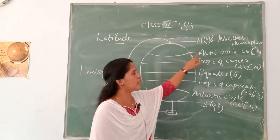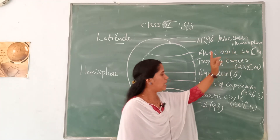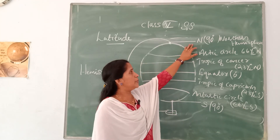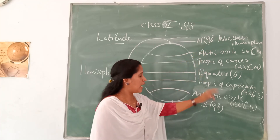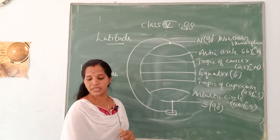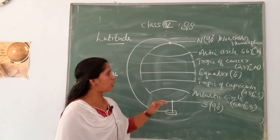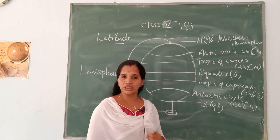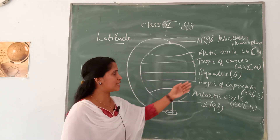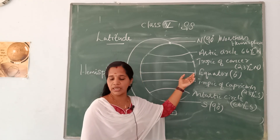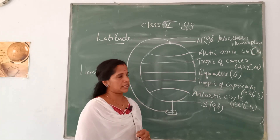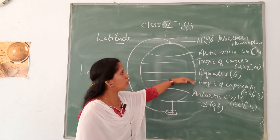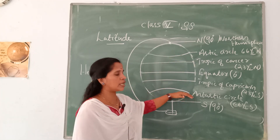The Arctic Circle is at 66.5 degrees north, and the Antarctic Circle is at 66.5 degrees south. The northern hemisphere goes up to 90 degrees north. To summarize: the equator is an imaginary line at 0 degrees. The four important latitudes are: the Tropic of Cancer, the Tropic of Capricorn, the Arctic Circle, and the Antarctic Circle.